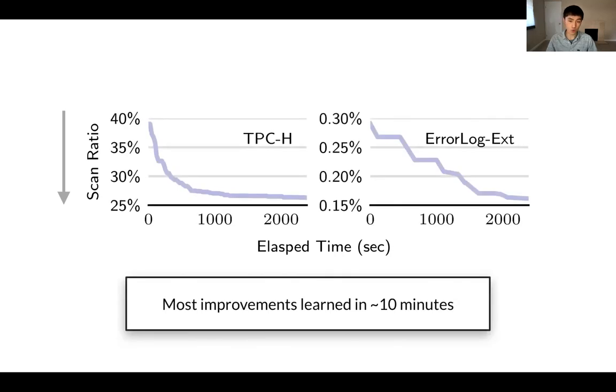Here, we investigate the learning efficiency. On the y-axis, I'm going to show the scan ratio of intermediate trees. So lower is better. On the x-axis is the elapsed time. So here are the learning curves for two workloads. The takeaway is that most improvements can be learned in the first 10 minutes. And if there's more time budget, better and better trees can be found up to convergence.